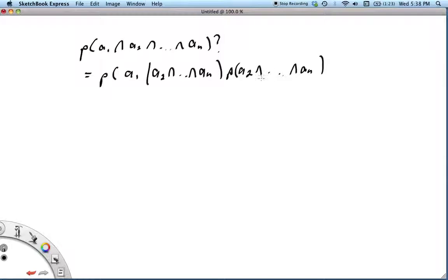And then we would simply apply this again. We would replace this piece with probability A2 given A3 intersect dot dot dot up to intersect An times the probability of A3 intersect dot dot dot intersect An.